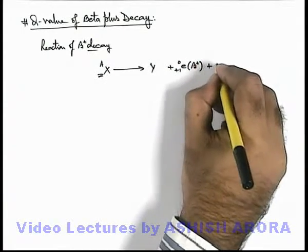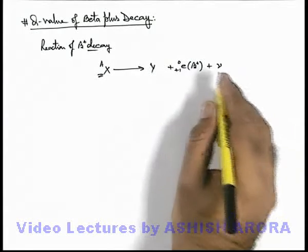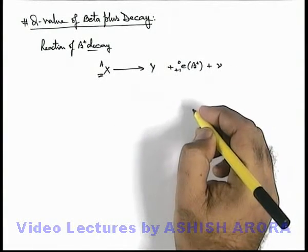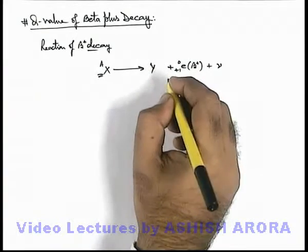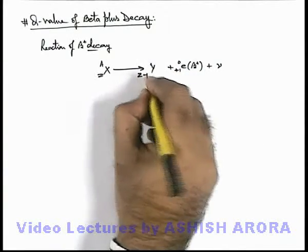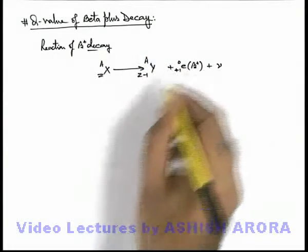Along with this we know that a neutrino is also emitted, but it has rest mass zero, so nothing to do with this particle while calculation of Q value. And as a positive charge is emitted, its charge number decreases by 1, but mass number has no effect.